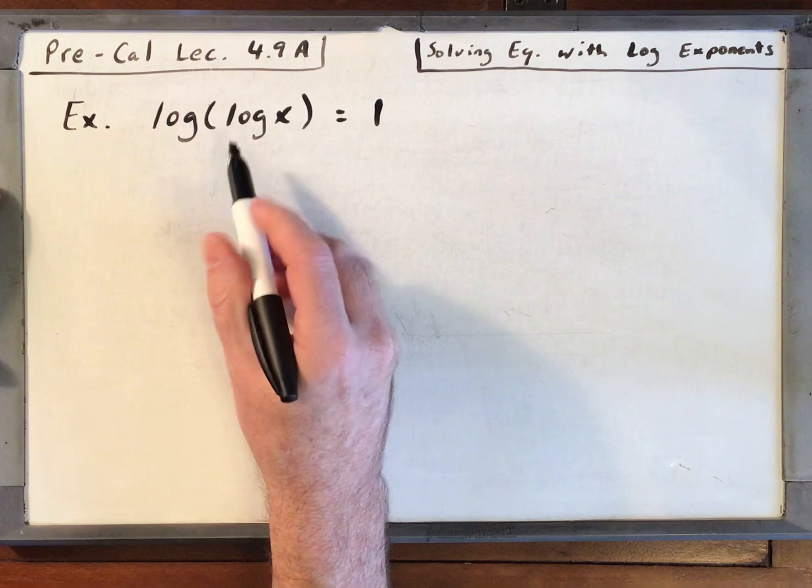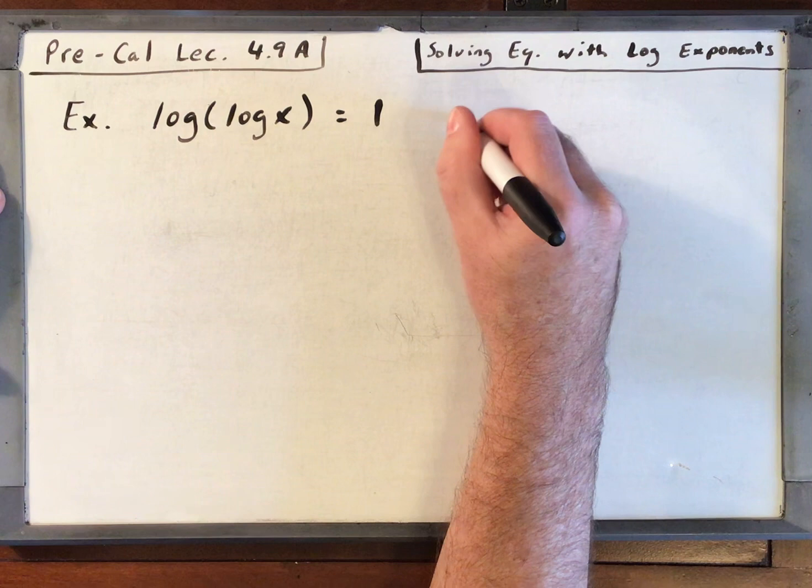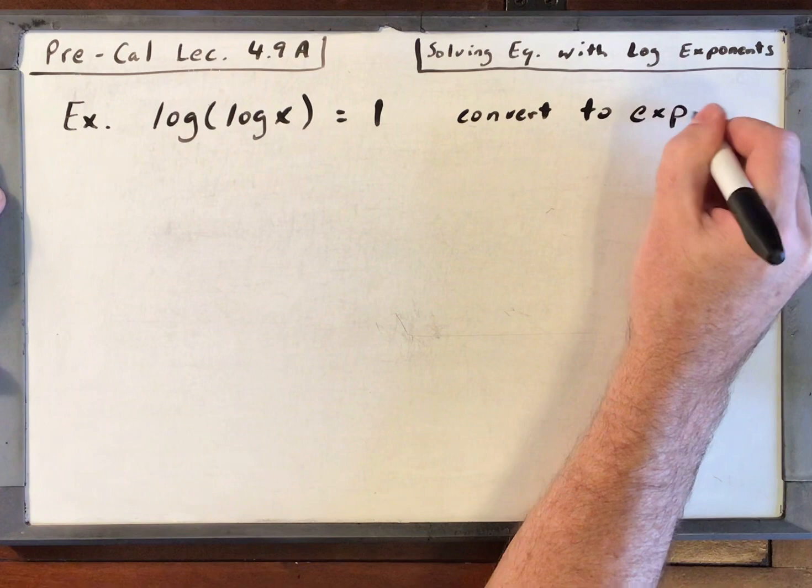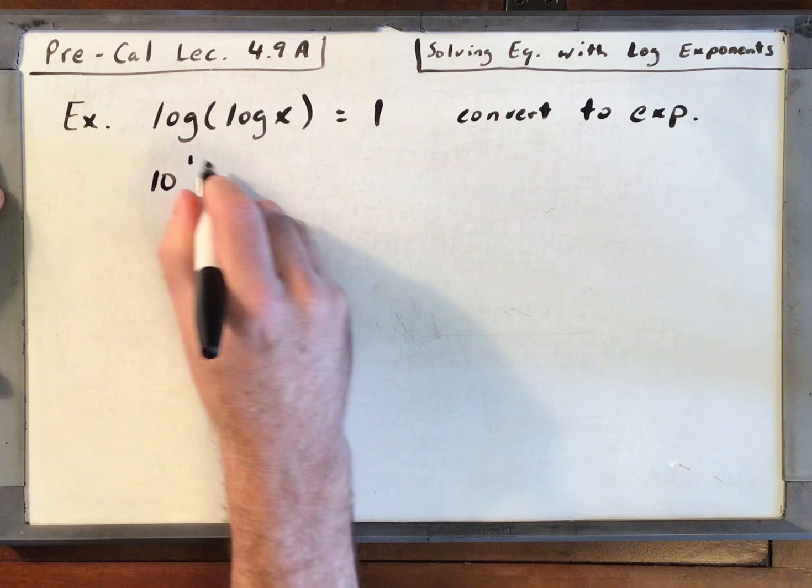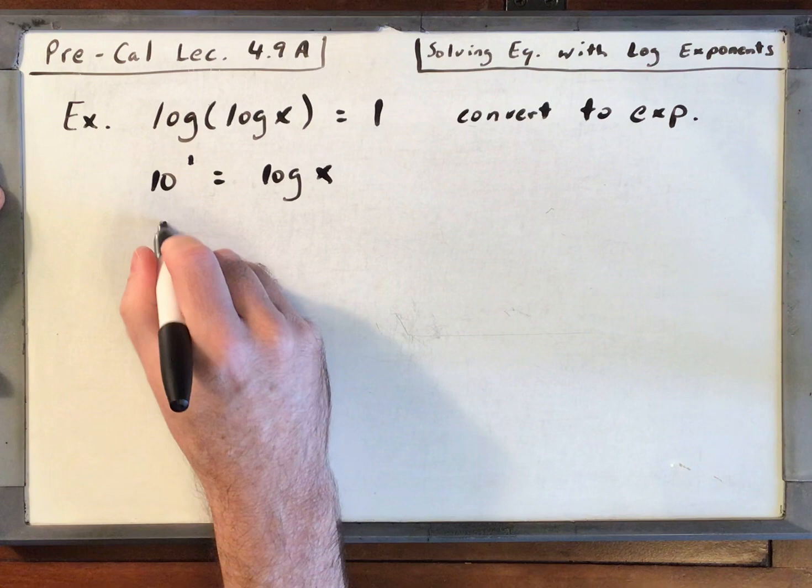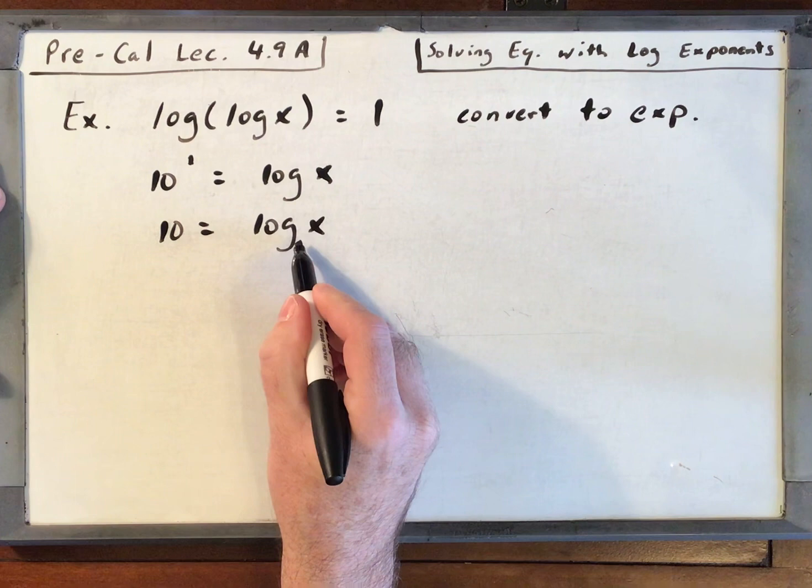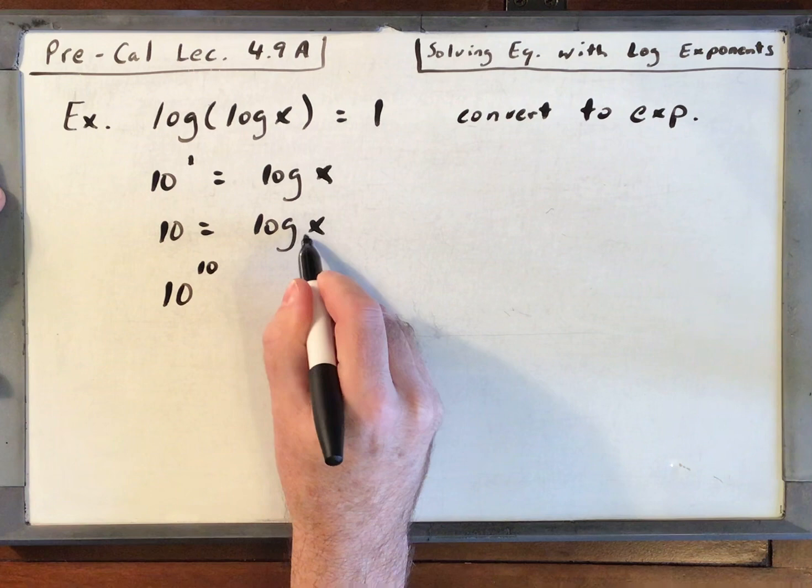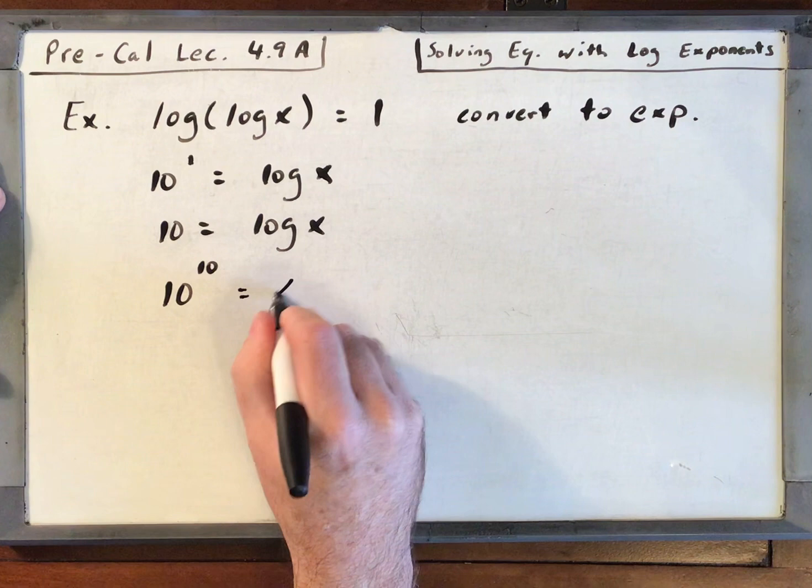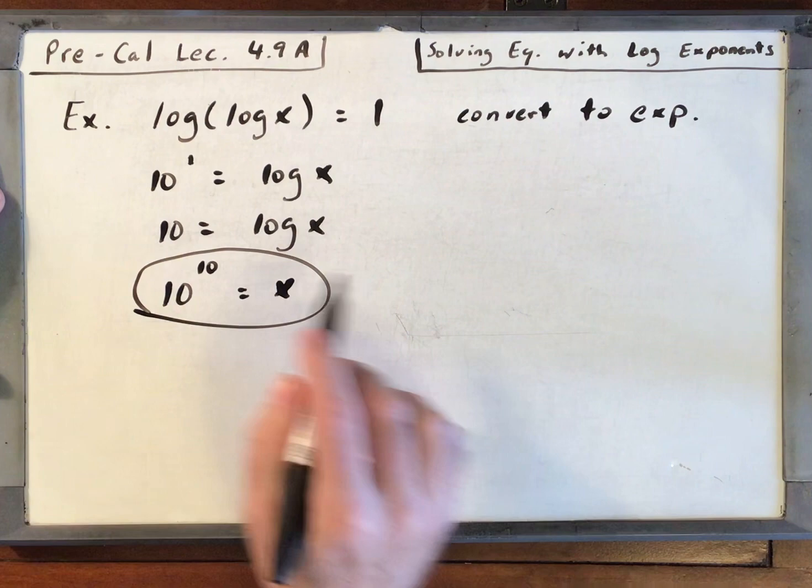A nested log. Well, this isn't hard, it's just going to take two iterations. First we want to convert to an exponential. Log base 10, that's like saying 10 to the first power is equal to log of x. Well, 10 to the first power is 10. Now I've got to do it again. 10 to the 10th, because that's 10 right there. It's base 10 even though I'm not writing it. Log base 10, 10 to the 10th is equal to x. Well, that's the answer. 10 to the 10th is a really big number, so write it as 10 to the 10th. You just got to untangle the nest.